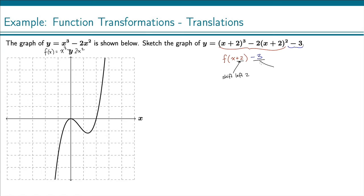And then this -3 here, that's after the function—we take the whole function and then minus 3. And that's a vertical shift, and it's minus 3, so it's down 3 units.